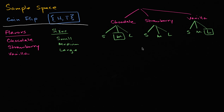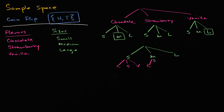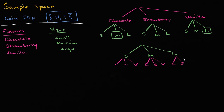You could have done it the other way around. You could say: I'm going to pick small, medium, or large first, and then for each of those pick chocolate, strawberry, or vanilla. So a medium cupcake could be chocolate, strawberry, or vanilla; a large cupcake could be chocolate, strawberry, or vanilla. For example, a medium chocolate cupcake here corresponds to that same outcome in the previous tree. You can use a tree diagram like this to think about the sample space and the nine possible outcomes.